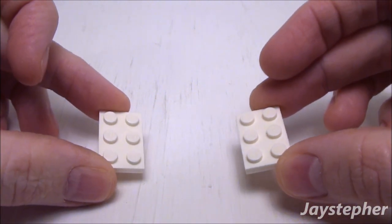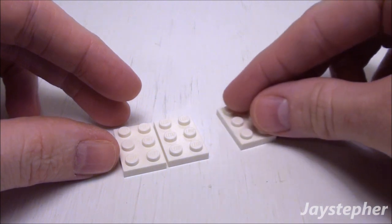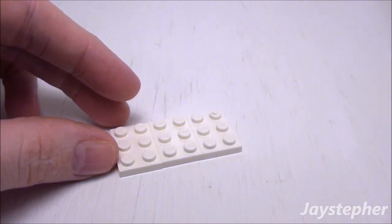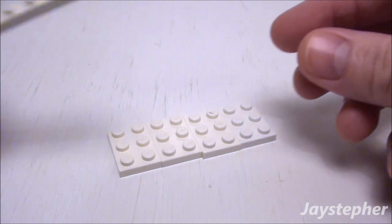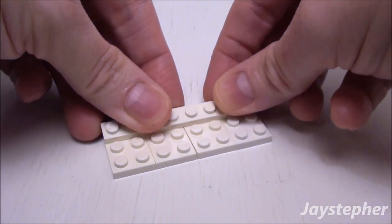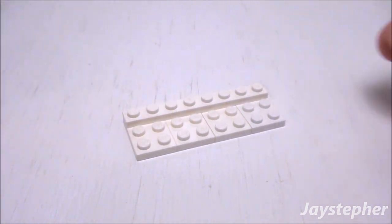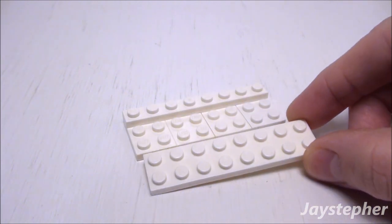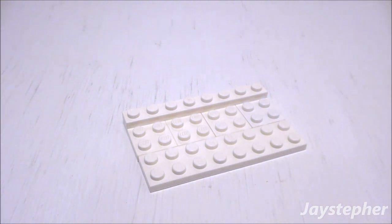Let's start off the construction with four 2 by 3 plates. Place them side by side. Next, take a 1 by 8 plate and place it on one end of the 2 by 3 plates. Take a 2 by 8 plate and place it right next to the 2 by 3 plates.